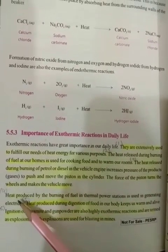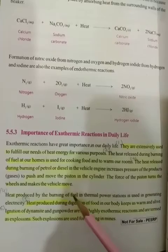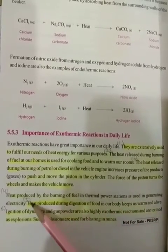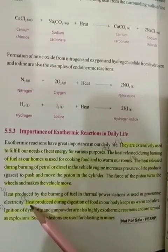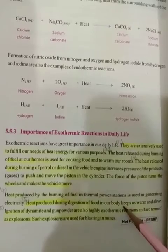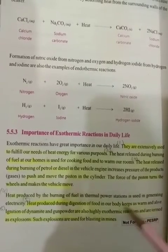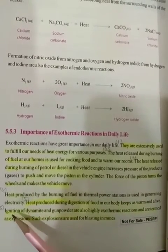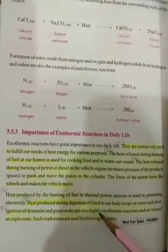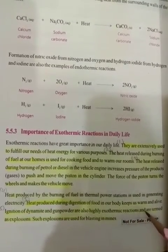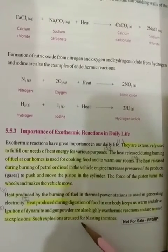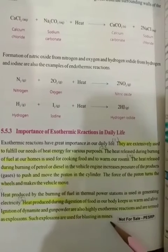The next point: heat produced by the burning of fuel in thermal power stations is used to generate electricity. The next point is about respiration — heat produced during digestion of food in our body keeps us warm and alive. The last point: ignition of dynamite and gunpowder are also highly exothermic reactions and are termed as explosions. Such explosions are used for blasting in mines.